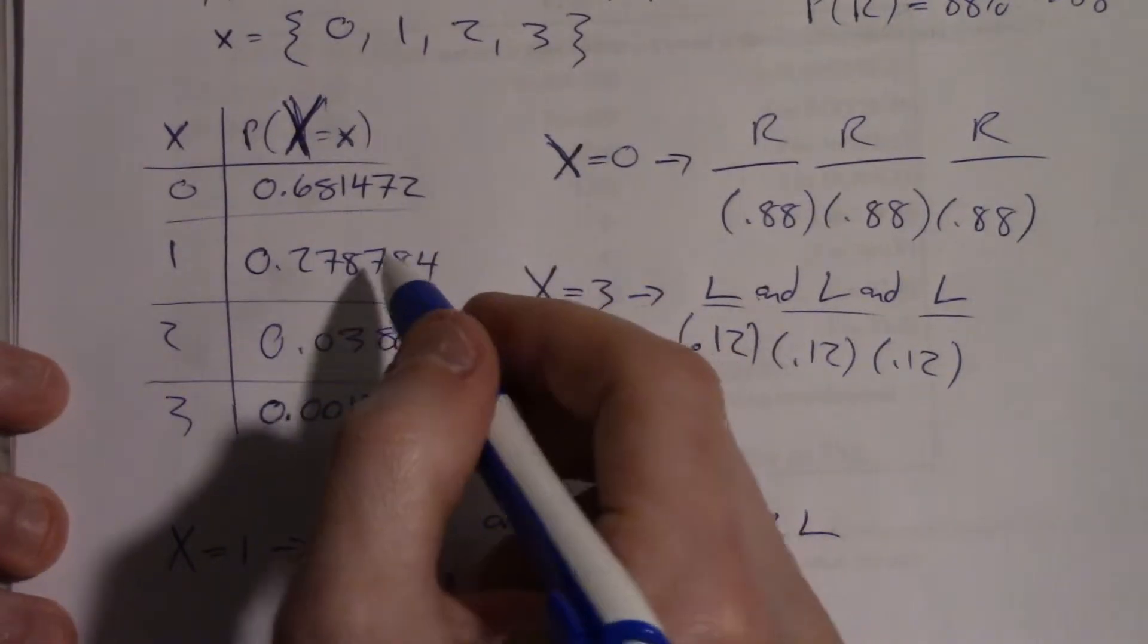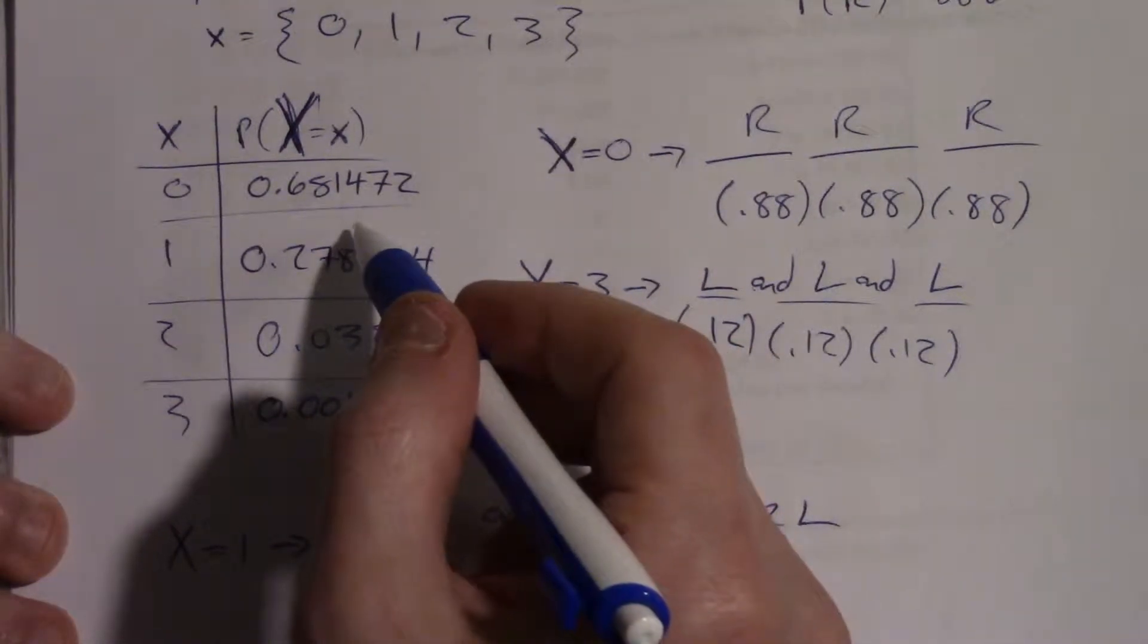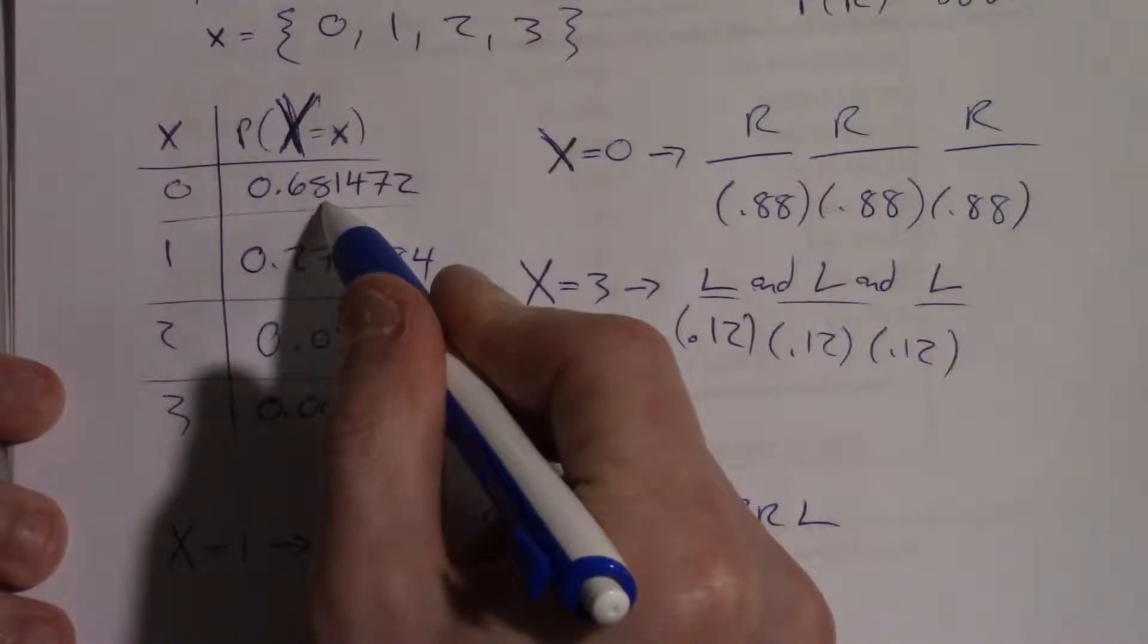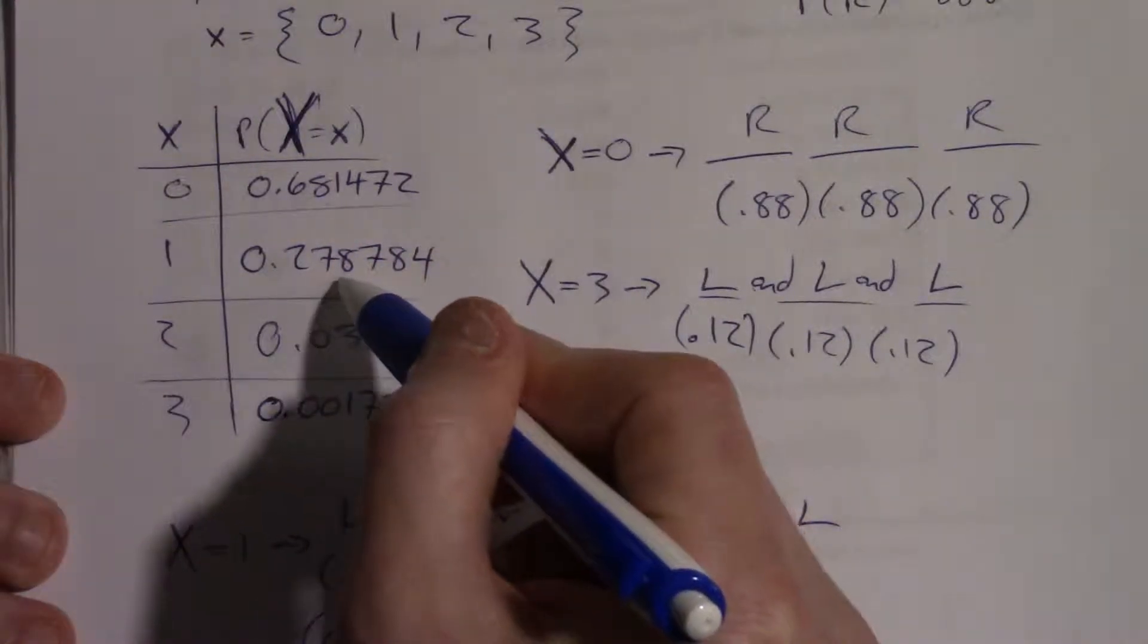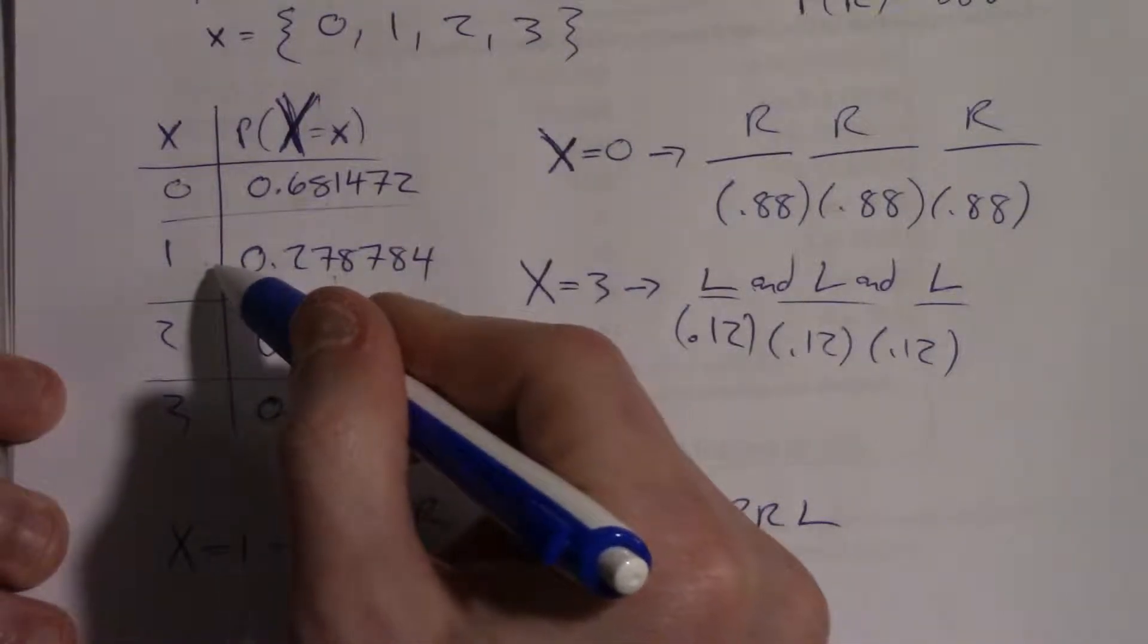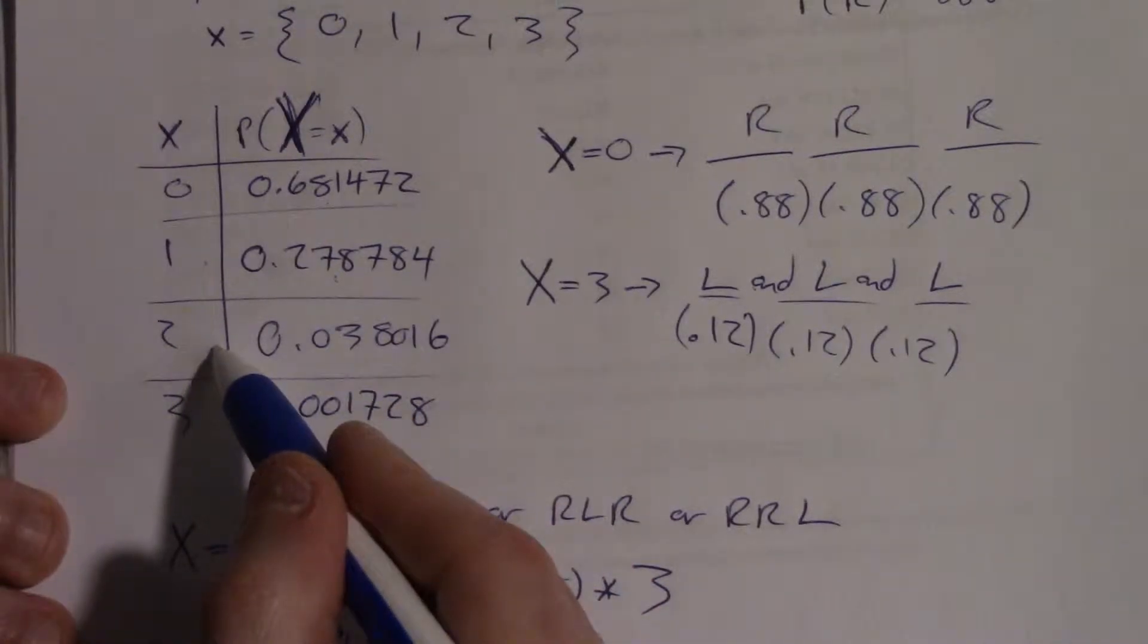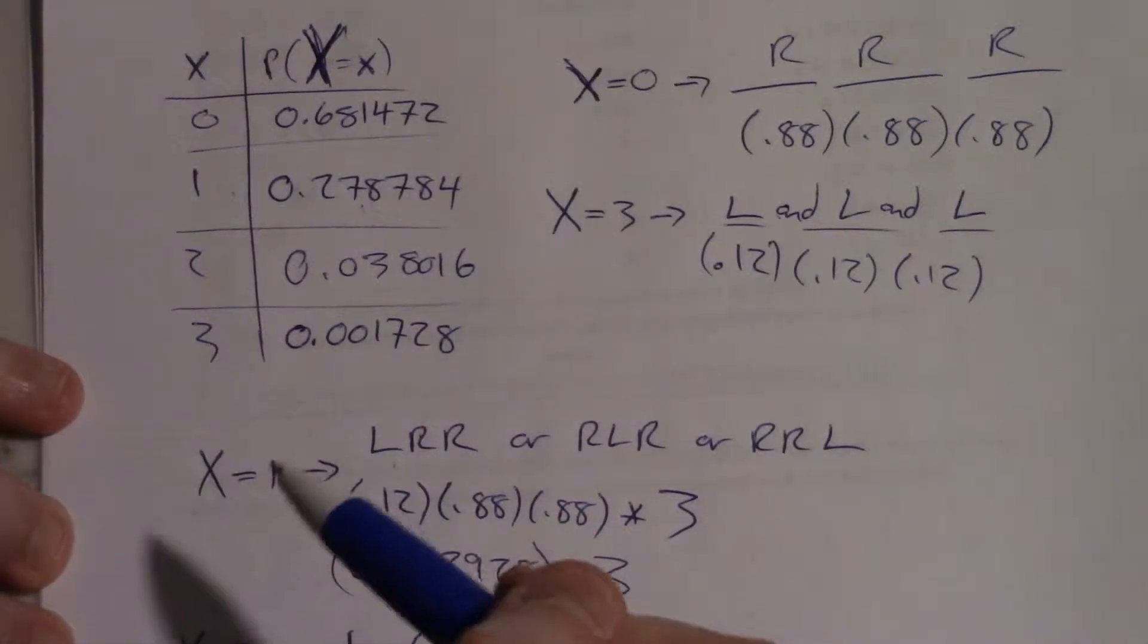So the distribution tells me that if I randomly sample three people from the US population, there's a 68% chance that none of them will be left handed. There's about a 28% chance that one will be left handed. It could be the first, second, or third person. There's about a 4% chance that two of them will be left handed. And there's less than a 1% chance that all three will be left handed.